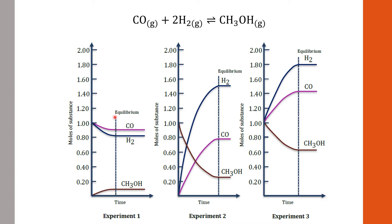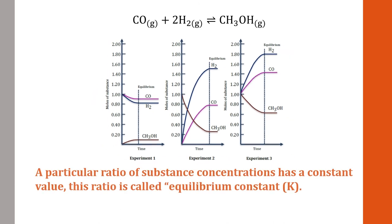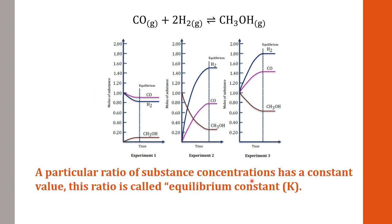As mentioned in the last video, if we take the concentrations of the substances and put them into a ratio, we get a particular ratio that gives us a constant value. This ratio is called the equilibrium constant, or K. Let's see what that particular ratio of substance concentrations looks like.